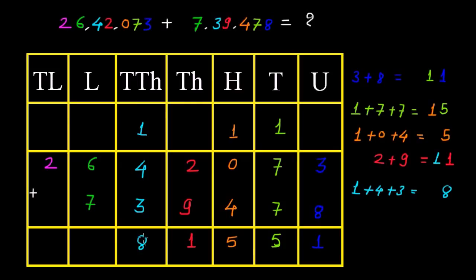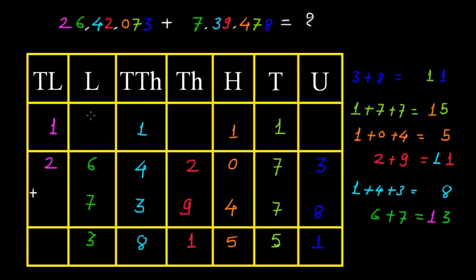And then we have 6 lakhs plus 7 lakhs is equal to 13 lakhs. So we must write 1 carried forward, and 3 in green color at the lakhs place in the answer. Then 1 plus 2 is equal to 3. So the final answer is 33,81,551.